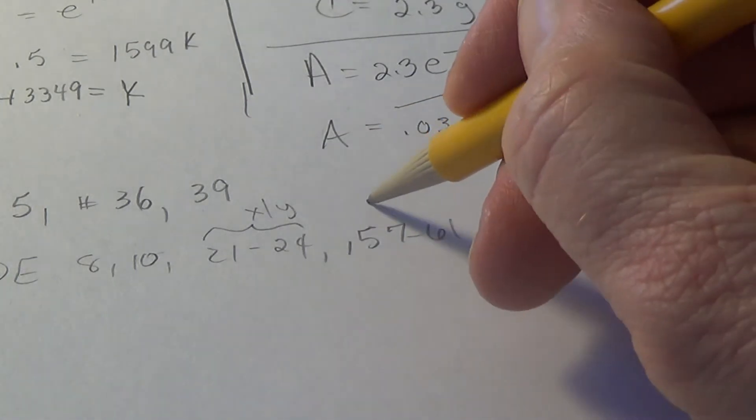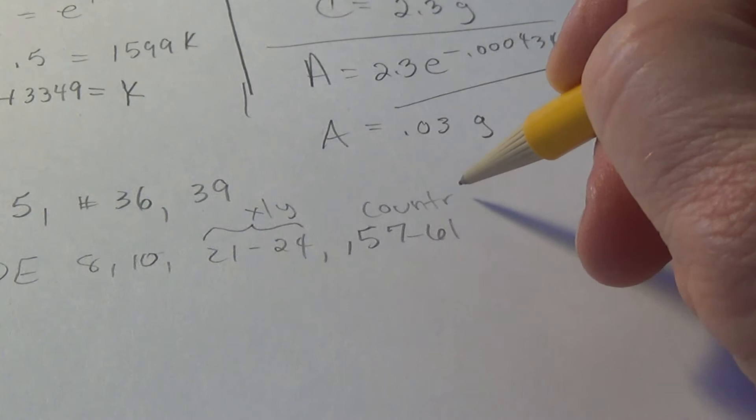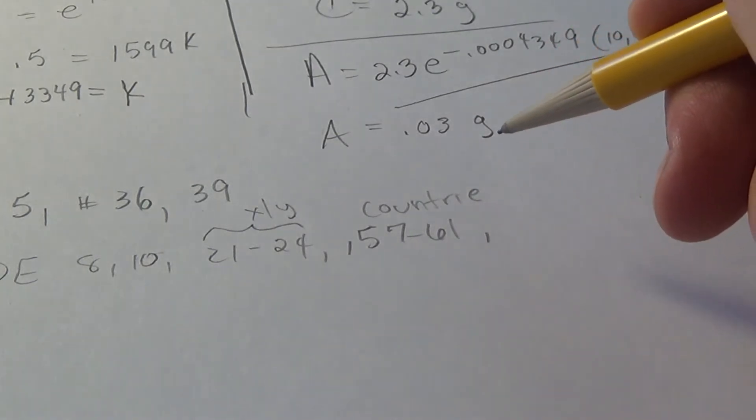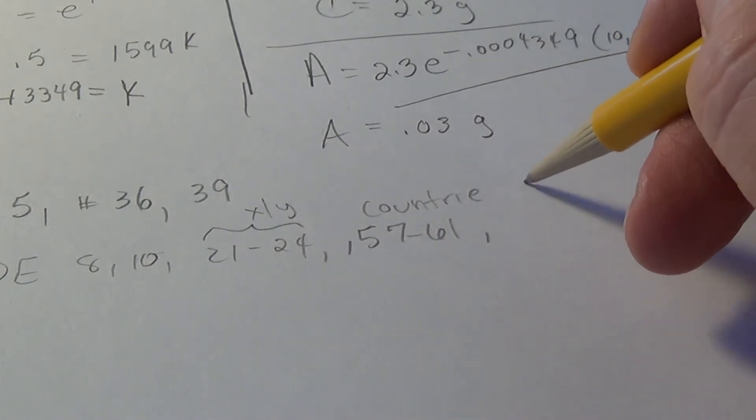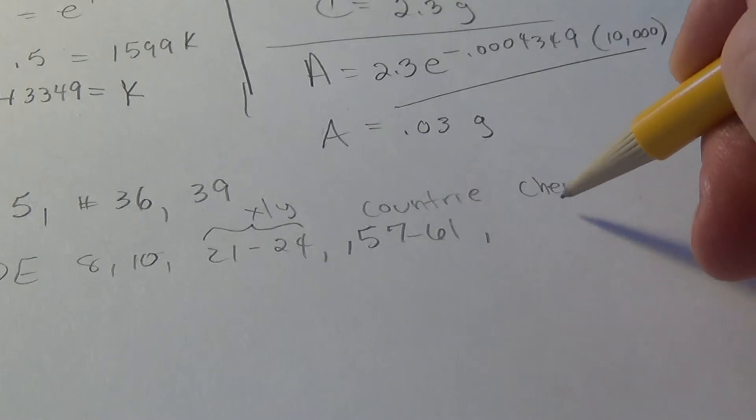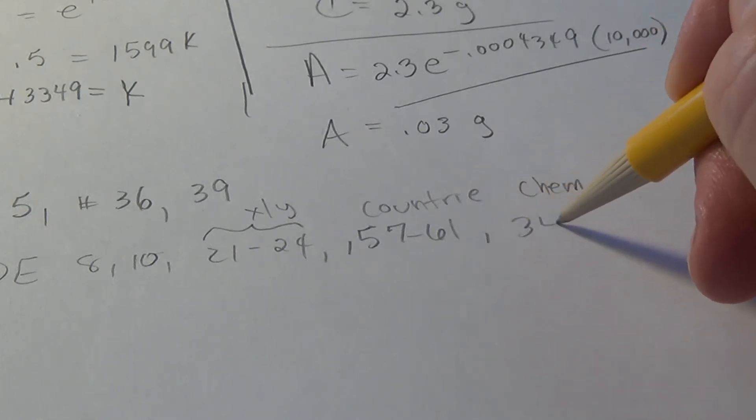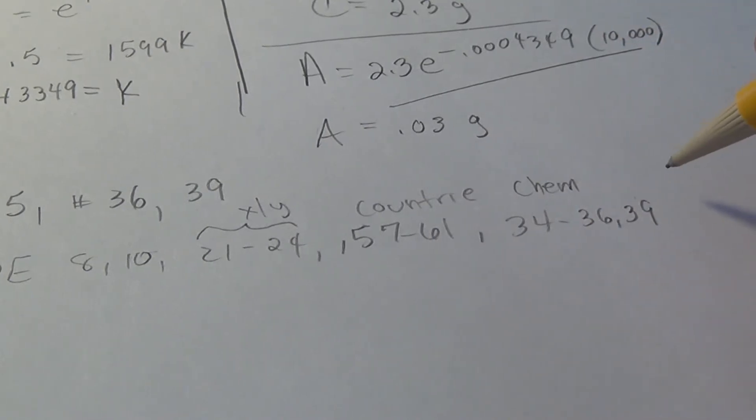Then we had 57 to 61, those where the country is, countries like Latvia. And then we had the chemical mixture problems, 34, 35, 36, and 39.